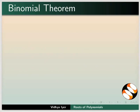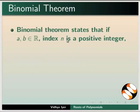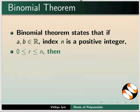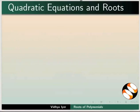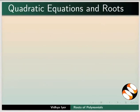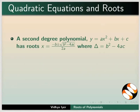Let us begin with the Binomial Theorem. A and B are real numbers, index n is a positive integer, R lies between 0 and n. Binomial Theorem states that (a + b) raised to n can be expanded as shown.